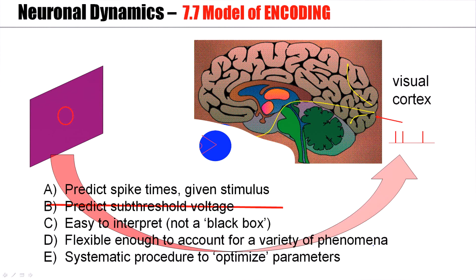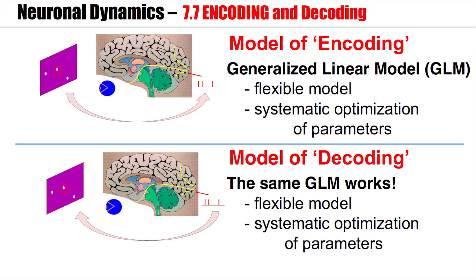Now, this is an example of encoding. We present the stimulus, and we record in the LGN, somewhere in between, or in the visual cortex, we determine the receptive fields. We can predict spike times given knowledge of the stimulus. Our model is easy to interpret, and it's flexible, and we have a systematic procedure to optimize parameters. This is the scenario of encoding. Now, we can turn the flow of the arguments around.